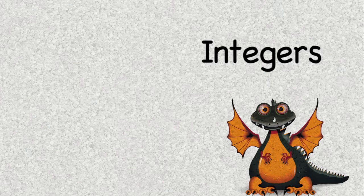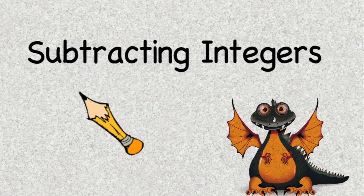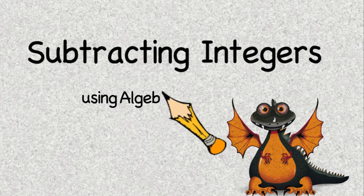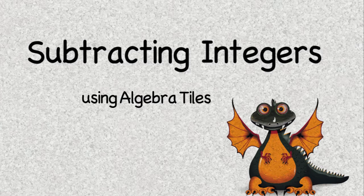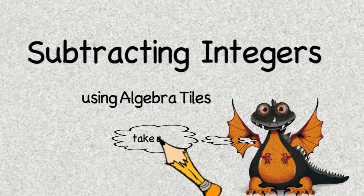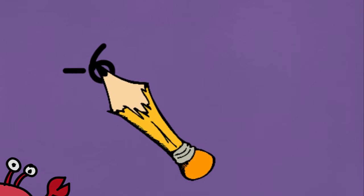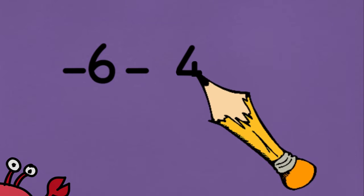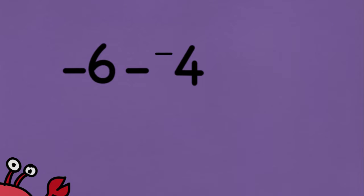Now that you have adding integers down, let's look at subtraction using the algebra tiles. When I think about subtraction, I think about taking something away, like with the problem negative 6 minus negative 4.